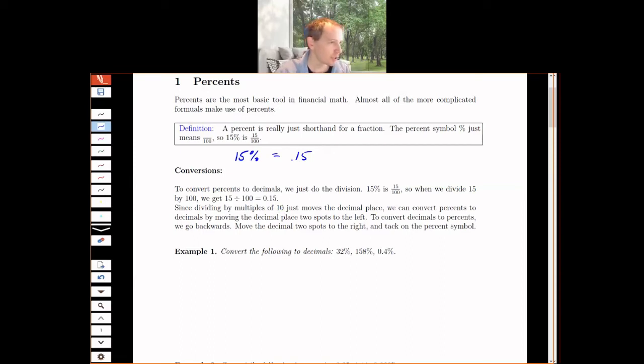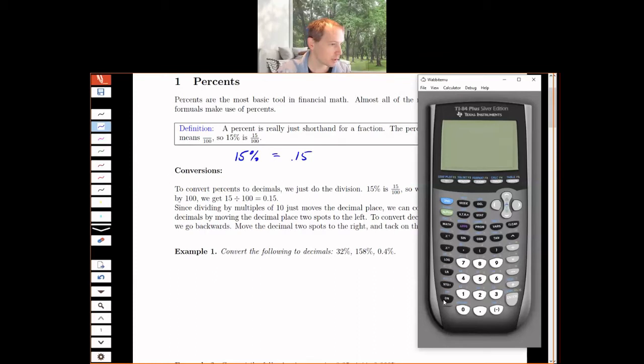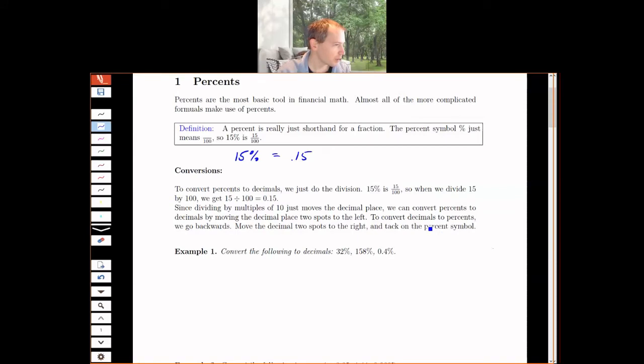The nice thing about dividing by 100 is it's just moving the decimal place. You can feel free to use your calculator also. Dividing by 100 moves the decimal place left, so if I'm going from a percent to a decimal, we move left.